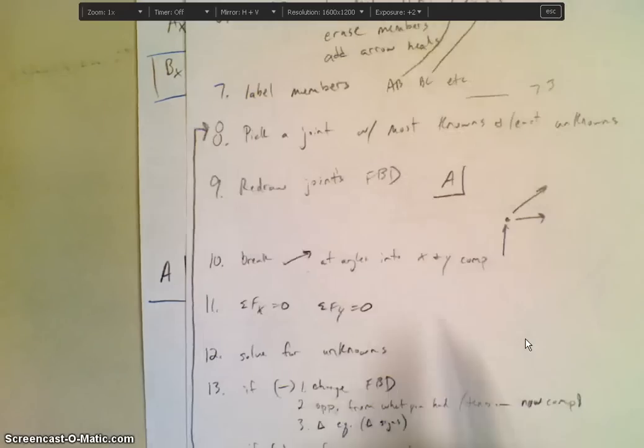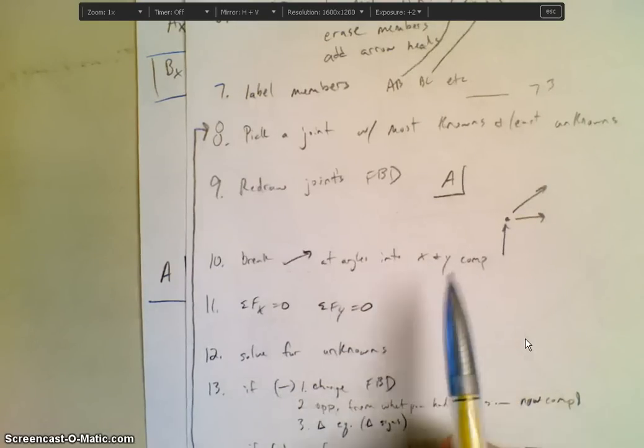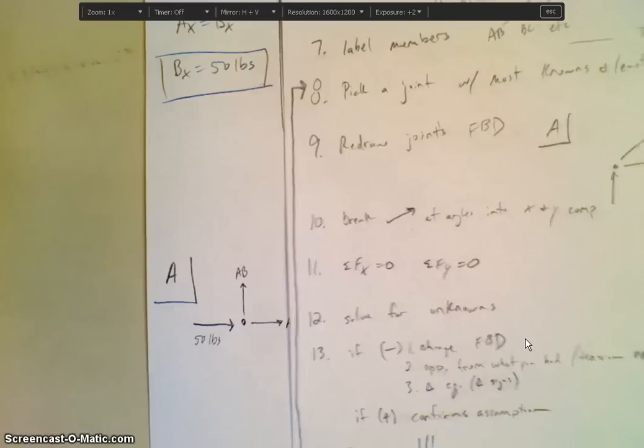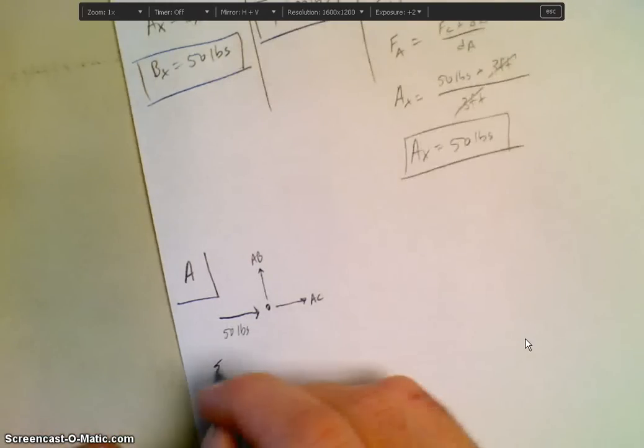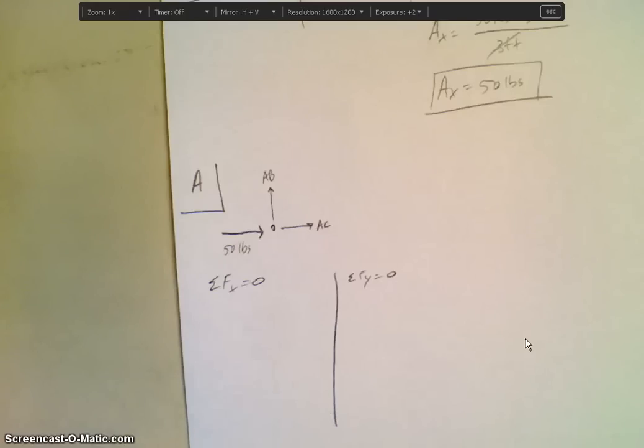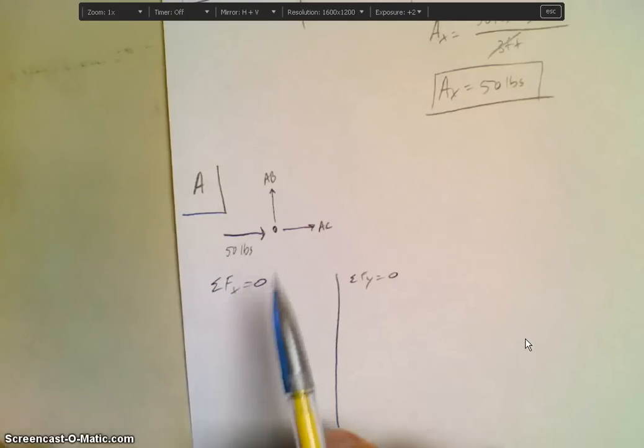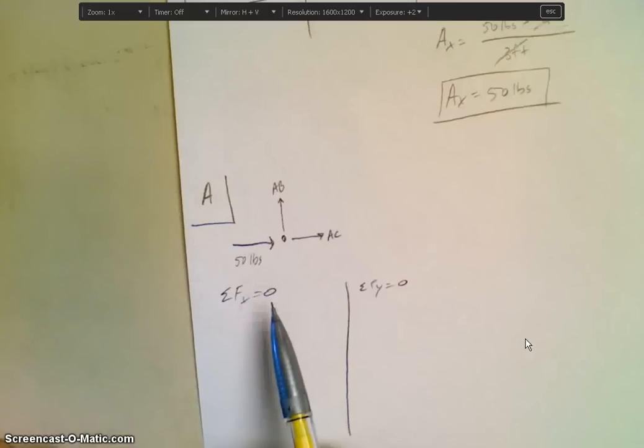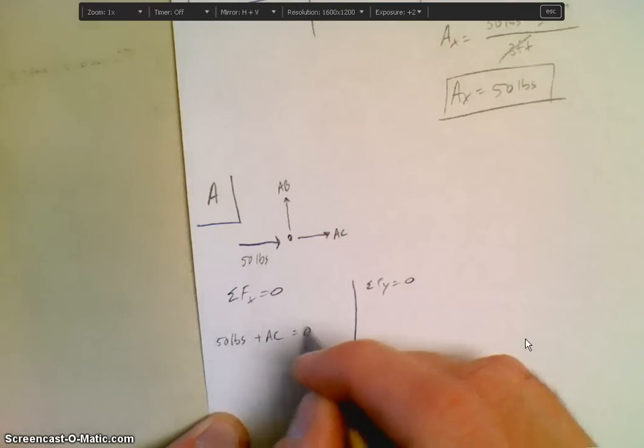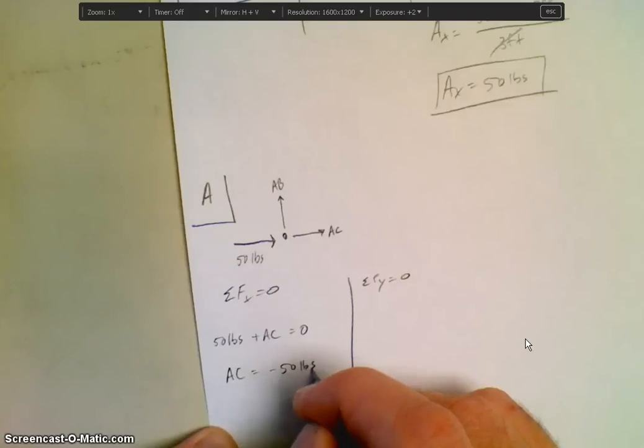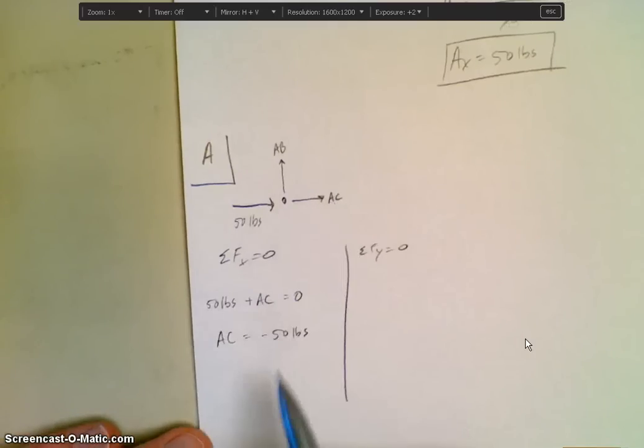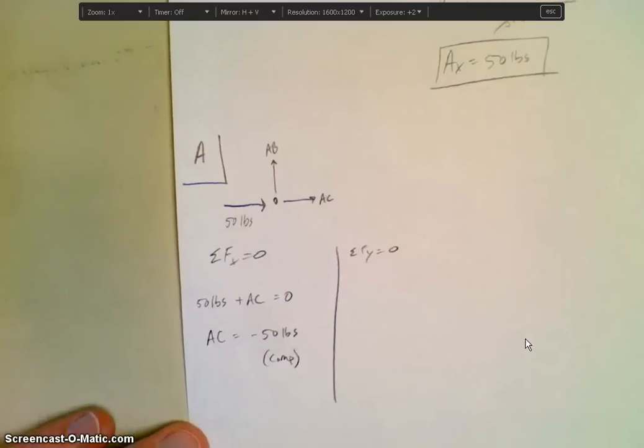Next step: break vectors at angles into X and Y components. We don't have any that are at angles, so we can move on. Then we need to do the sum of the forces in the X and the sum of the forces in the Y are equal to zero. So we set that up. What forces are in the X direction? Fifty pounds, it's positive, and AC, which is positive. So then AC equals a negative fifty pounds. So that negative tells us that my original assumption of AC being in tension is incorrect. So AC is actually in compression.